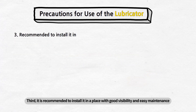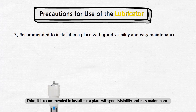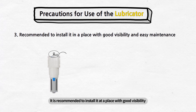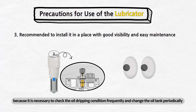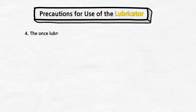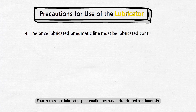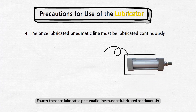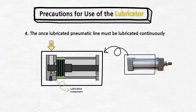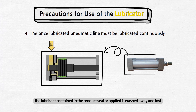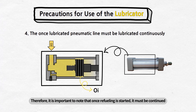Third, it is recommended to install it in a place with good visibility and easy maintenance. It is recommended to install it at a place with good visibility because it is necessary to check the oil dripping condition frequently and change the oil tank periodically. Fourth, the once lubricated pneumatic line must be lubricated continuously. When lubricating the valve or cylinder by installing the lubricator, the lubricant contained in the product seal or applied is washed away and lost. Therefore, it is important to note that once lubrication is started, it must be continued.